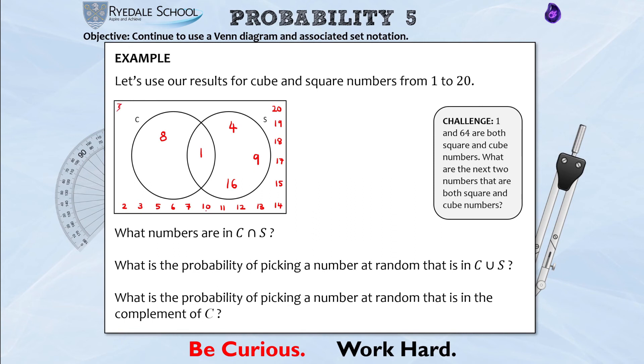So my first question, it says what numbers are in C intersection S? So in other words, what is in the overlap? And there is only one number that is in that set, in the intersection, and that is one. I'll put it in some curly brackets.